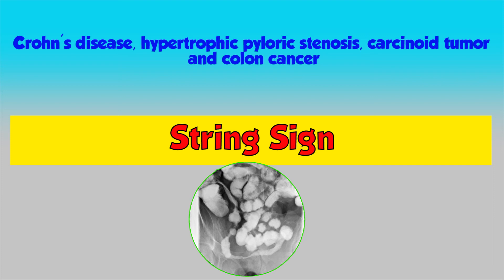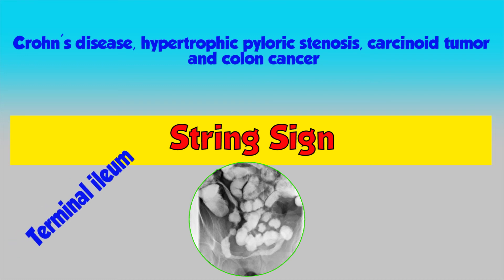The string sign of the terminal ileum is significant. There is a finding that means hypertrophic pyloric stenosis diagnosis. You can also have pyloric narrowing, which is seen on radiographic studies. You can also have a thin string and a narrow channel. For example, you can have several string sign variants, a narrow track sign, and a narrowing associated with ulceration.